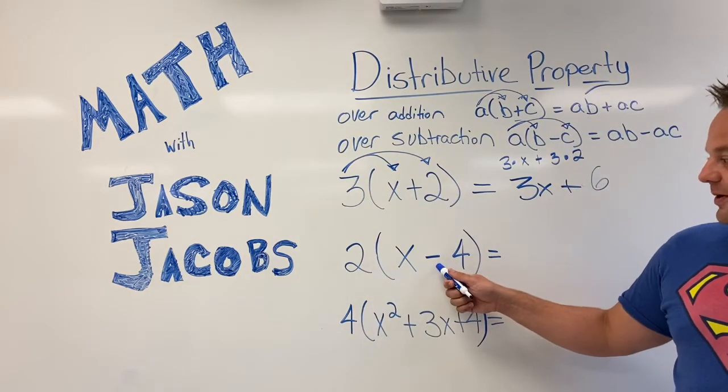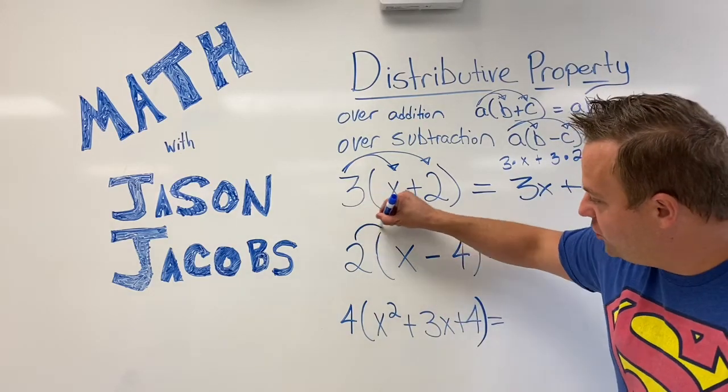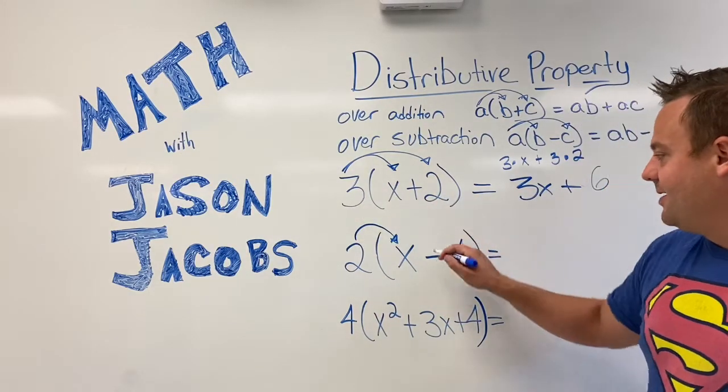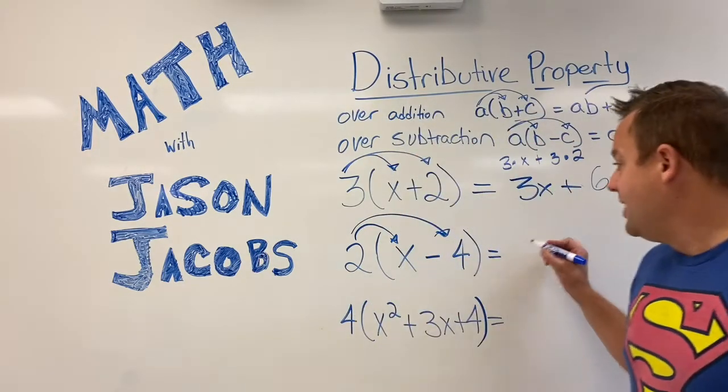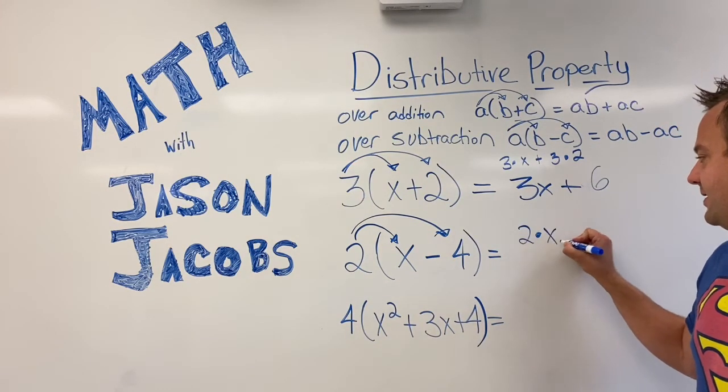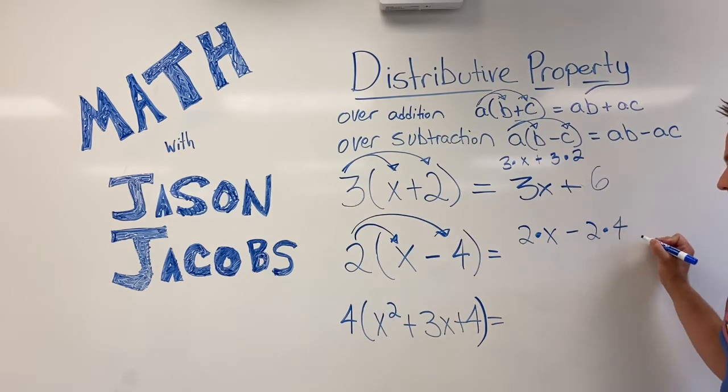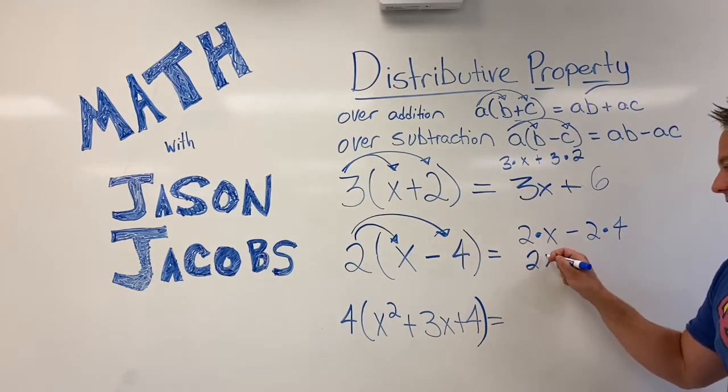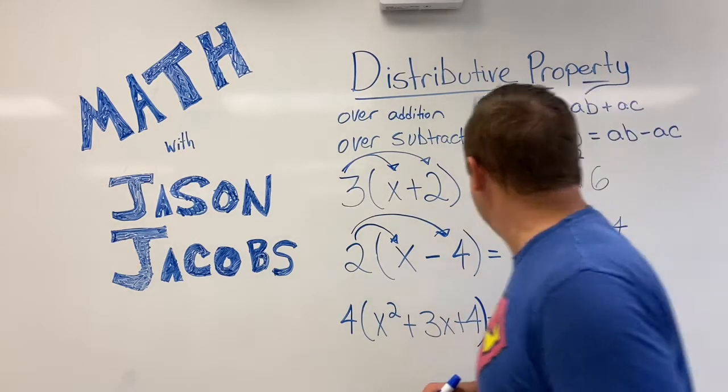This is distributive property over subtraction because the subtraction sign here. Two times x minus two times four. I find the arrows really help guys. So two times x minus two times four. So that simplifies to 2x minus 8, 2x minus 8 right there.